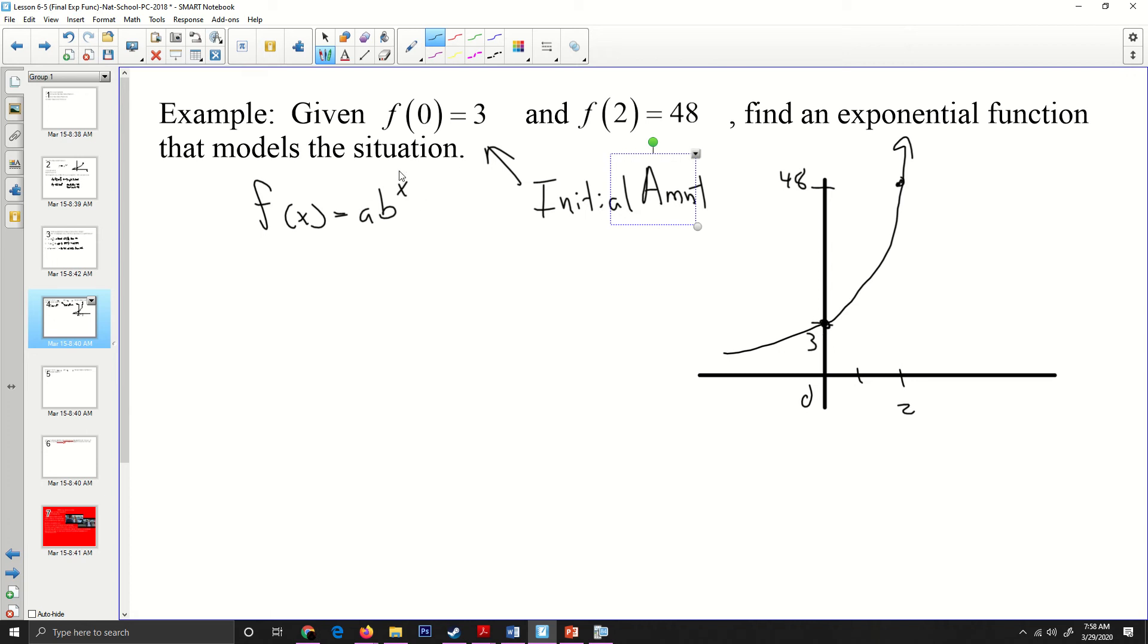Now the good news is when you let X equal to zero, this value here has to be one. So if I go F of zero equals a B to the zero, I know that I get three and anything to the zero power. So a B to the zero equals three. And so a has to equal three. That's good. And now I can use that fact and the next value to finalize my answer. If I plug in two,